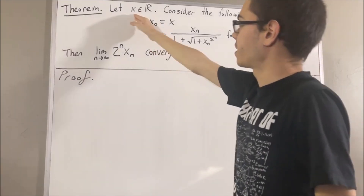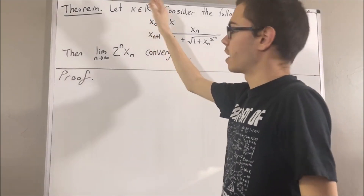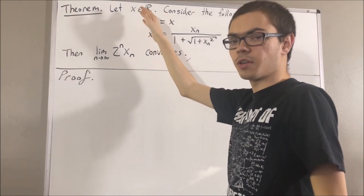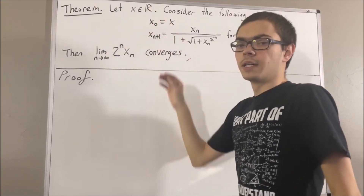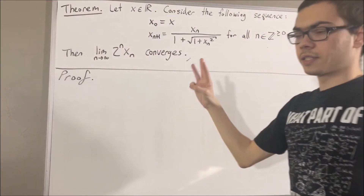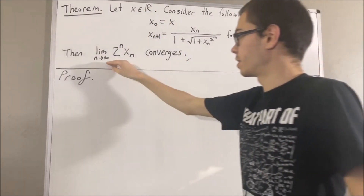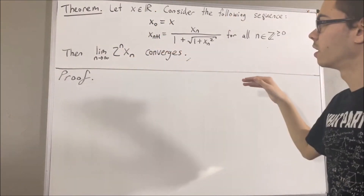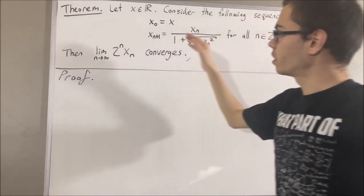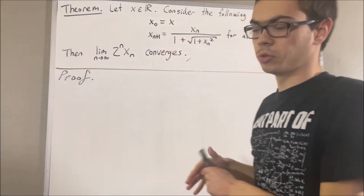Either x equals 0, x is greater than 0, or x is less than 0. And in all three cases, we're going to show that this sequence converges. Let's start with the case x is equal to 0.